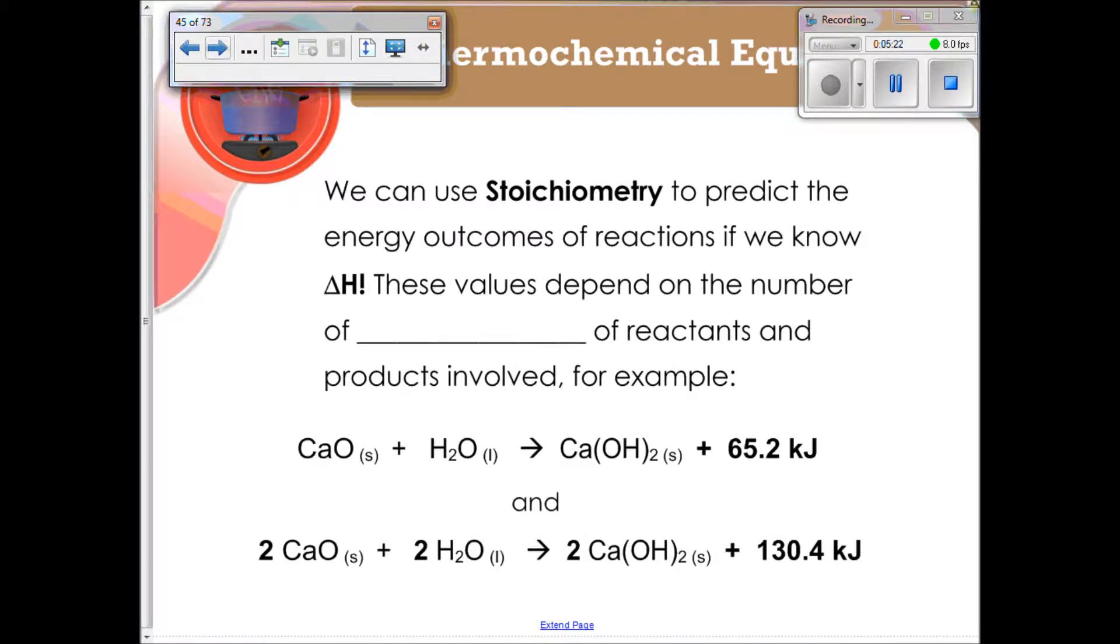So we can use stoichiometry to predict the energy outcomes of reactions if we know the change in H. That's the enthalpy change. These values depend on the number of moles of the reactants and the products that are involved. So, for example, and we talked about this in that kind of first example that we did.